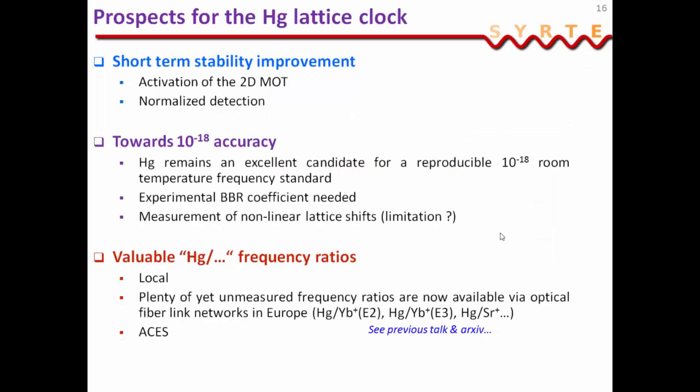So now, just a few prospects for the future of the mercury clock. We would really like to improve on the short-term stability of our clock. And for that, we have a few ideas. The first of which is to activate 2D MOT to make use of the high vapor pressure of mercury that we have. We also need to perform normalized detection, which we don't do at the moment. I want to say that mercury seems like a very good candidate for a room temperature frequency standard with an uncertainty in the 10^-18 level. But for that, somebody needs to measure the BBR coefficient experimentally, as well as take care of the measurement of the non-linear lattice light shift, which could be a limitation for the mercury clock.